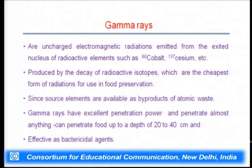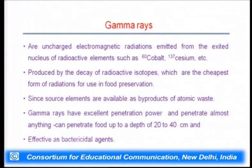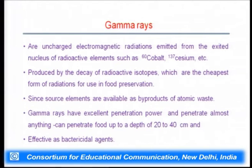Gamma rays are uncharged electromagnetic radiations emitted from the excited nucleus of radioactive elements such as Cobalt-60 and Cesium-137. They are produced by the decay of radioactive isotopes and are the cheapest form of radiation for use in food preservation, since the source elements are available as a byproduct of atomic waste. Gamma rays have excellent penetration power and can penetrate food up to a depth of 20 to 40 centimeters, making them the most commonly used by food industries.